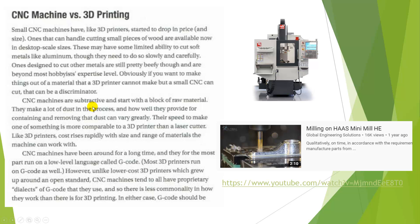As we look at these CNC machines, they start with a block of raw material and they cut that. Laser cutters do the same thing — it's more of a flat material, though, where it doesn't go up into the Z-axis when we start working with those.